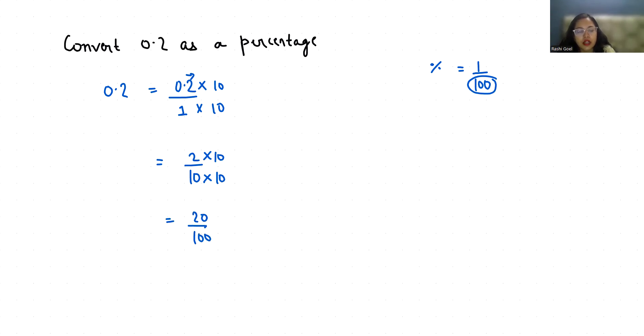We can rewrite it as 20 times 1 by 100. Now we can simply replace this 1 by 100 with percentage. 0.2 in terms of percentage is 20%. I hope it's clear and you find it useful.